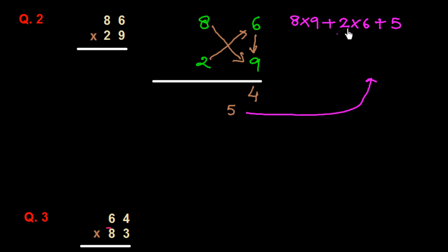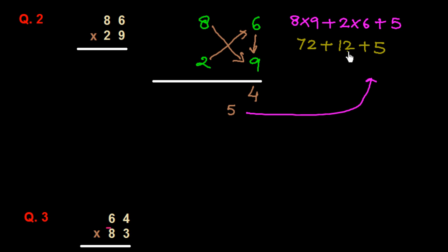8 times 9 is 72. 2 times 6 is 12. So 72 plus 12 plus 5 is 89. I write down 9 and carry 8.